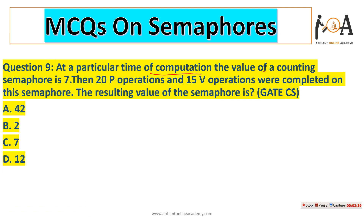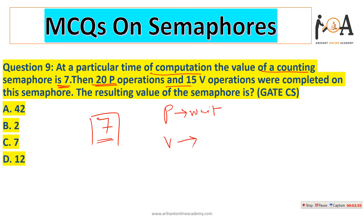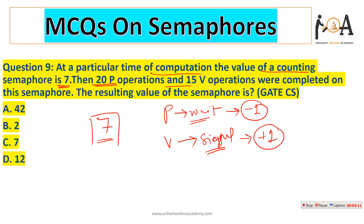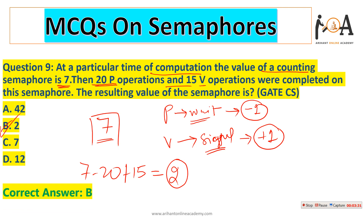At a particular time of computation the value of SEMA 4 is 7. Currently the counting SEMA 4 has value 7. If 20 P operations (P means wait, which decreases the value by 1) and 15 V operations (V means signal, which increases the value by 1) are performed: 7 minus 20 plus 15 equals 2. The final resultant value of SEMA 4 would be positive 2. This is an important GATE computer science question.